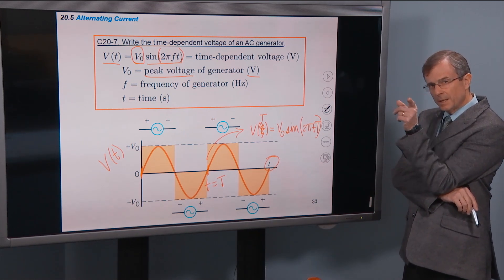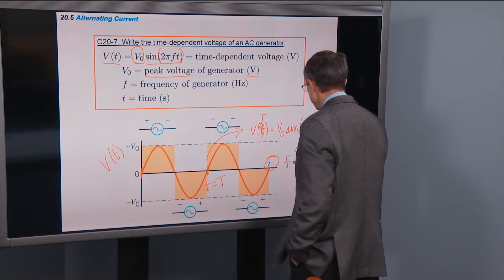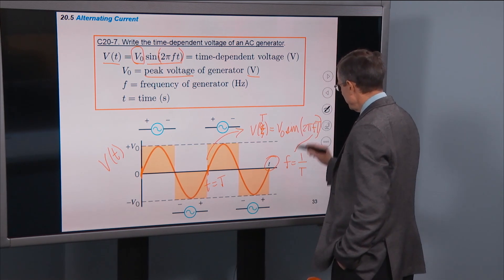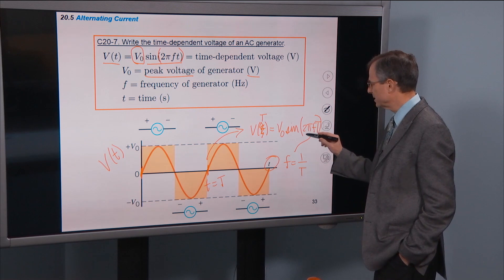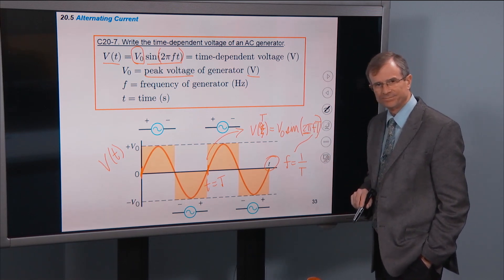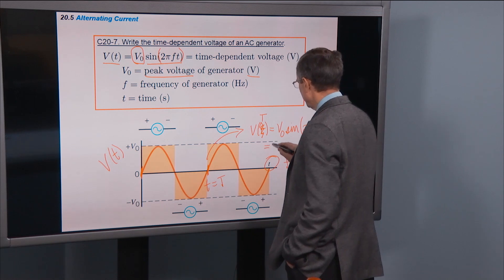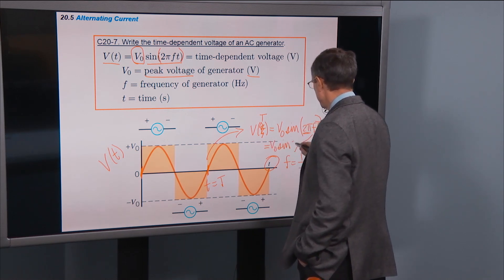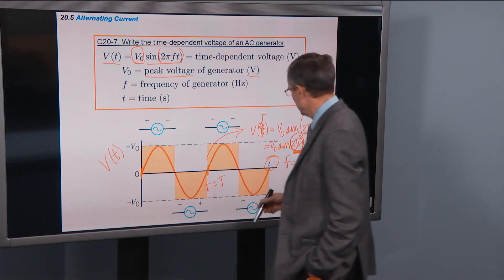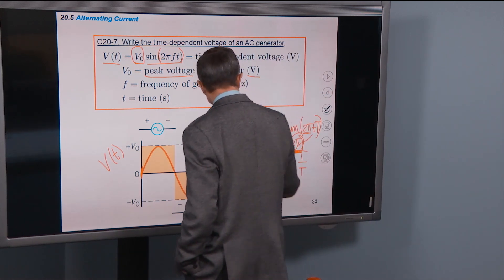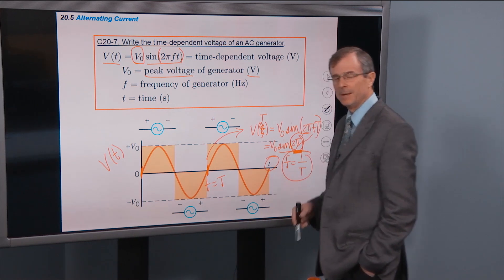Isn't there a relationship between the frequency and the period? Yes — the frequency is 1 over the period. Substituting in, frequency times period cancels out, and we get the sine of 2π, which is the same as the sine of 360 degrees — it's zero. This says you've gone through one complete cycle of the sine function in one period T, exactly what we expect.